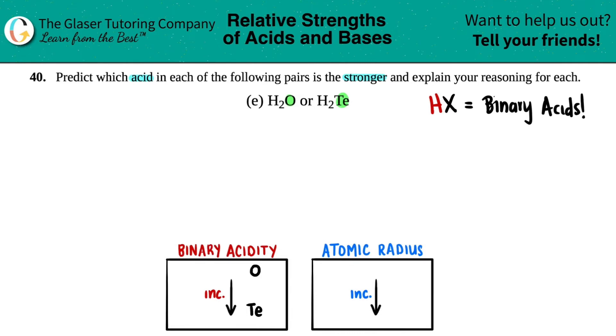So the answer here is H₂Te would be the more acidic one out of the pair. But now we just have to explain the reasoning.